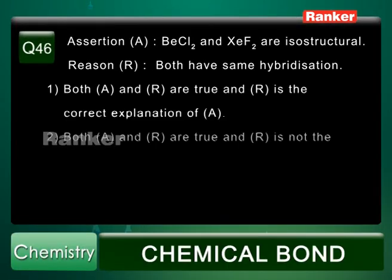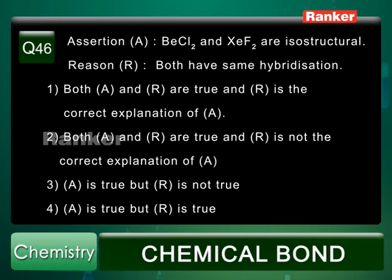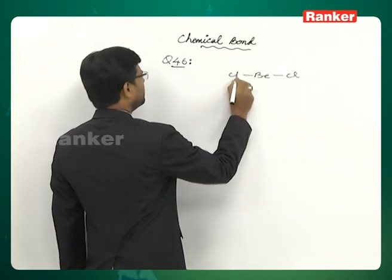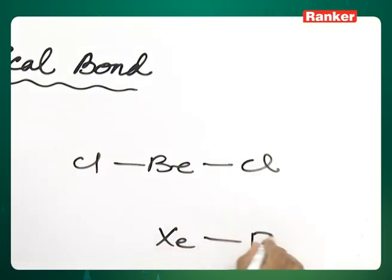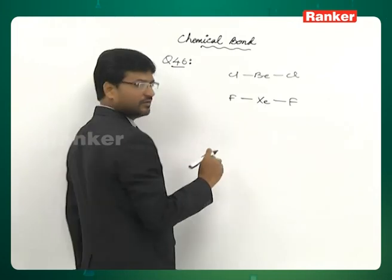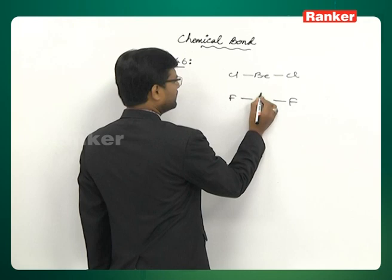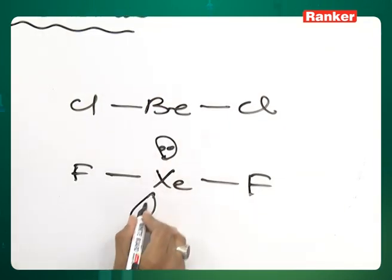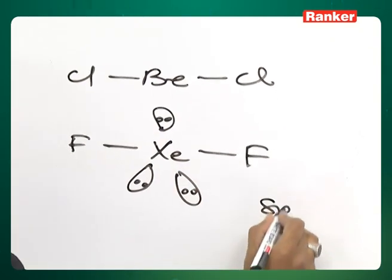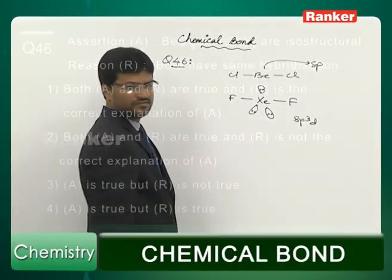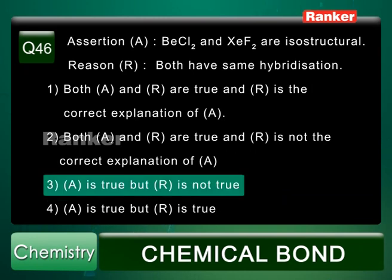Question number 46: Assertion — beryllium chloride and xenon difluoride are isostructural. This is correct; both are linear molecules. Reason — both have the same hybridization. This is not true. Xenon difluoride has three lone pairs on xenon, giving sp3d hybridization, while beryllium chloride has sp hybridization. So A is true but R is not true. Correct answer is the third option.